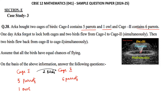Then 2 birds flew back from cage 2 to cage 1 — the same number of birds flew back at a time. Assume that all the birds have equal probability of flying. On the basis of this information, we need to answer some questions.